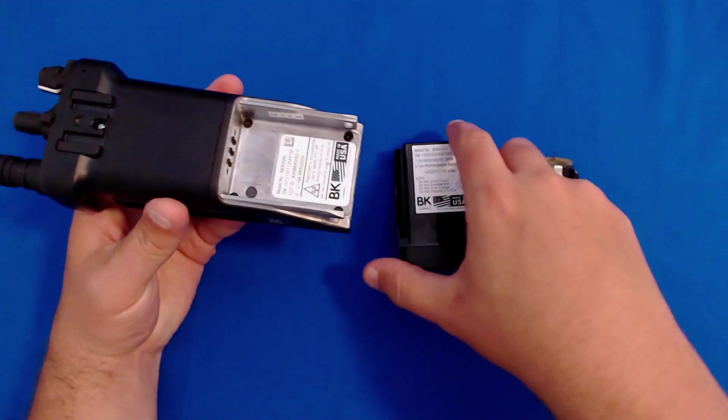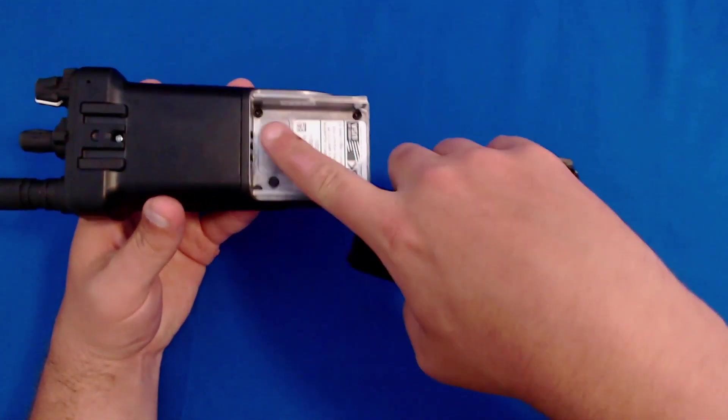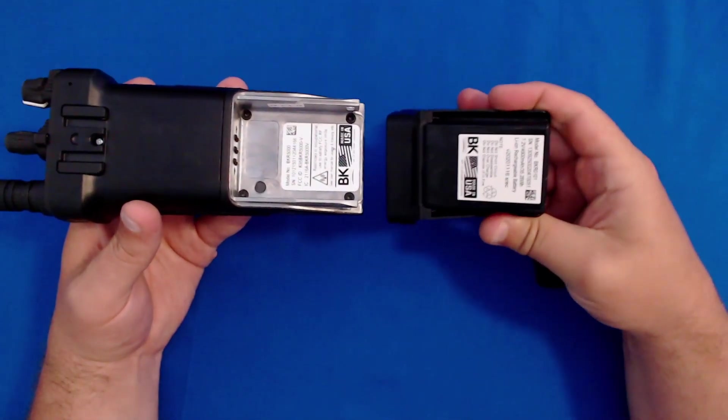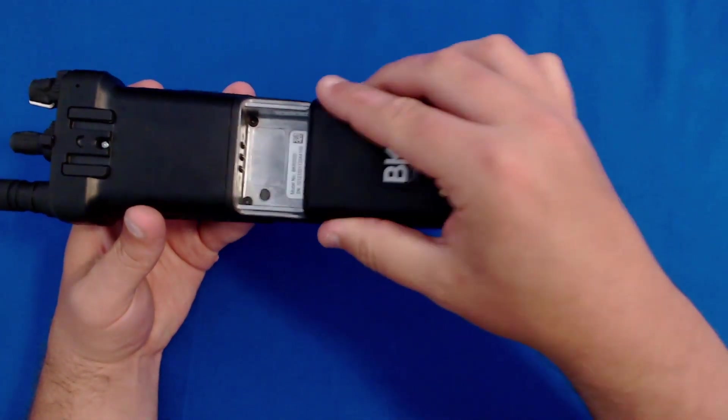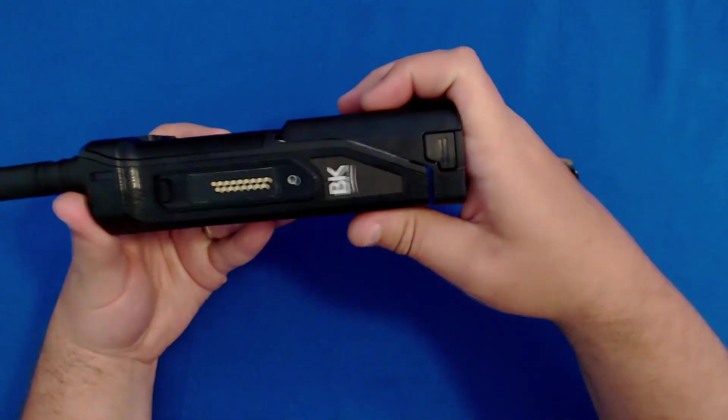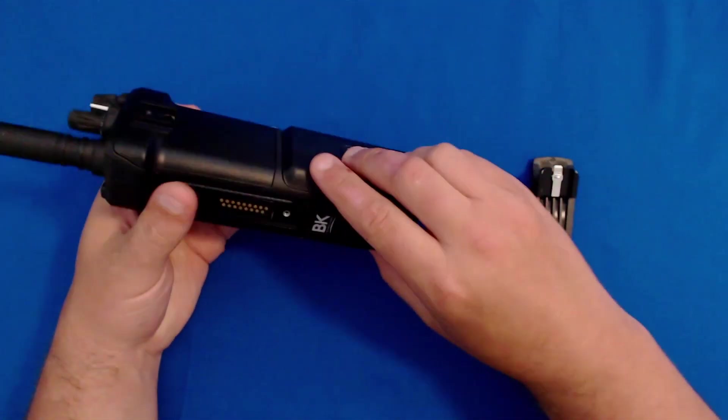Once the antenna is installed, we can now install the battery. To install the battery, flip the radio over. Observe there are two rails on the back of the radio. Match those two rails with the two slots on the battery, then simply slide the battery up and connect it firmly with the radio.